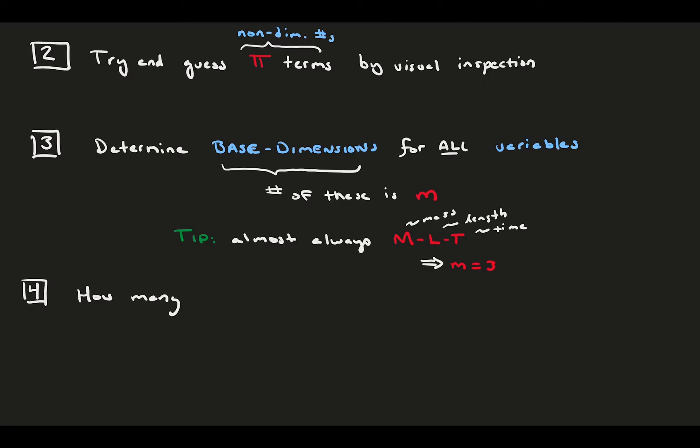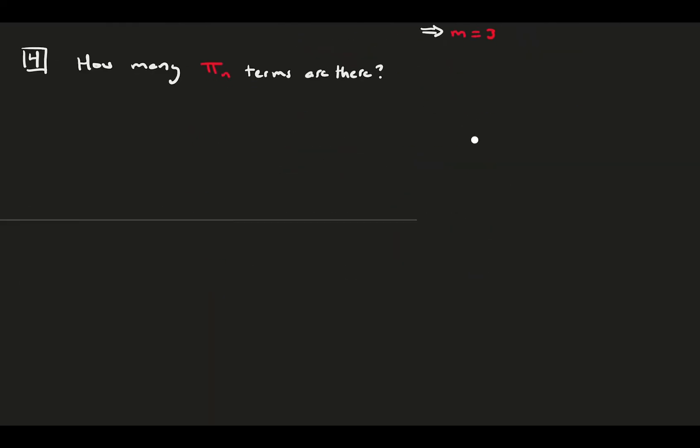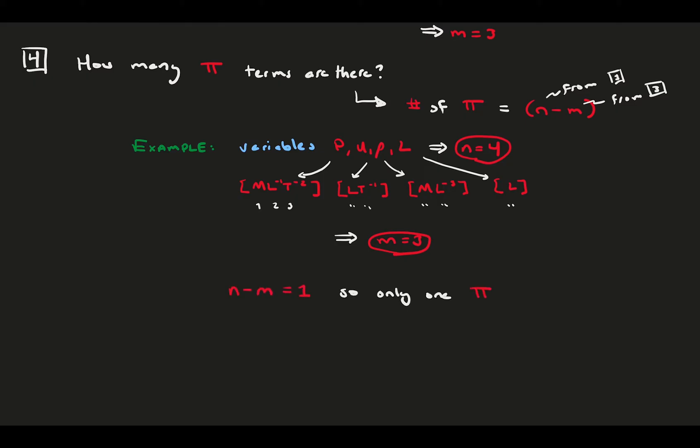In step four, we can directly calculate how many dimensionless numbers we can expect from this group of parameters. The number of pi terms are n minus m, where n was from step one and m was from step three. For example, let's say we have a problem that gives us the variables p for pressure, u for velocity, rho for density, and the length scale l. This is n equals four variables. If we write out the base dimension set for each parameter, pressure is ml to the minus one t to the minus two, u is l times t to the minus one, and so on. In this set of parameters, we only see m, l, and t, so our m is equal to three. These are our base dimensions of the problem. That means that since n is four and m is three, we can expect only one dimensionless term from that group.